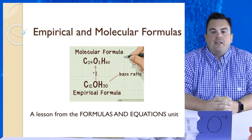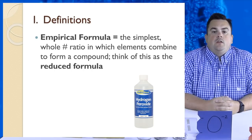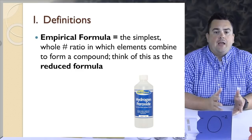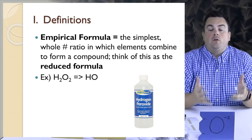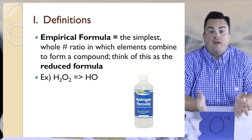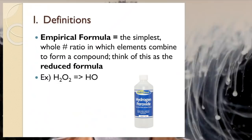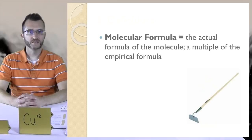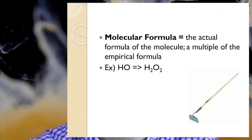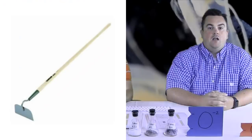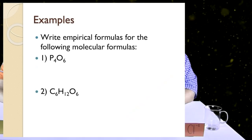The empirical formula is the simplest whole number ratio in which the elements combine to form a compound. Think of this as a reduced formula. For example, the chemical compound hydrogen peroxide is H2O2. It reduces by a factor of 2 to HO. So HO is the empirical formula of H2O2. A molecular formula is the actual formula of the molecule. It's a multiple of the empirical formula. If we multiply HO by a factor of 2, we get the molecular formula H2O2.